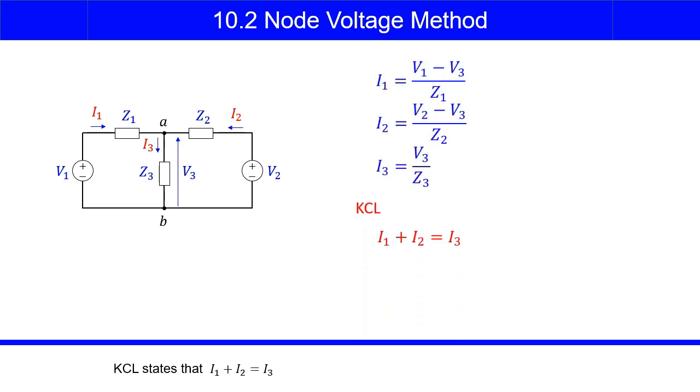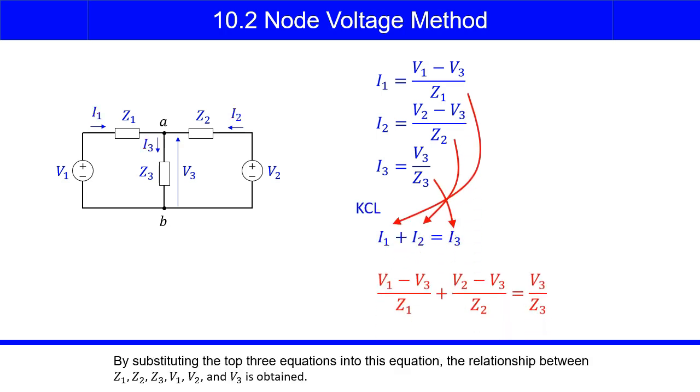KCL states that I1 plus I2 equals I3. By substituting the top three equations into this equation, the relationship between Z1, Z2, Z3, V1, V2, and V3 is obtained.